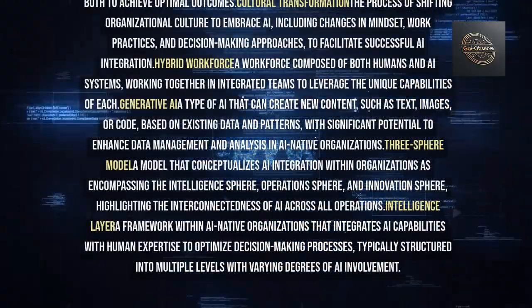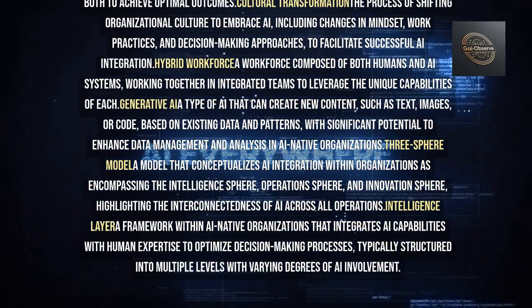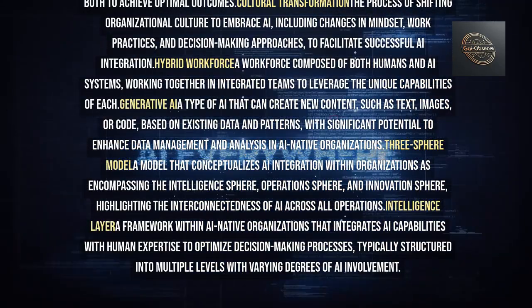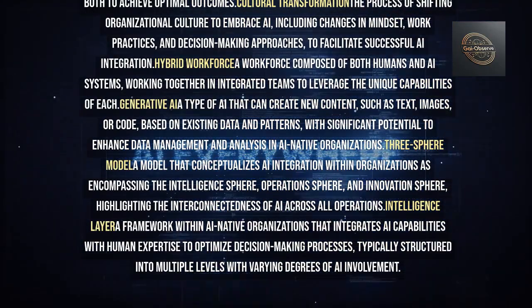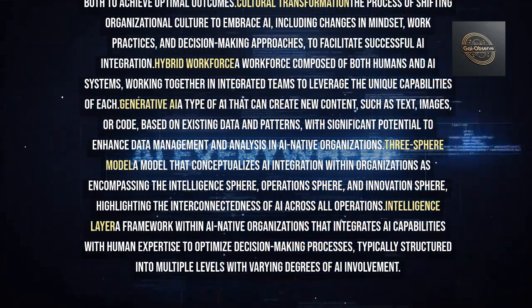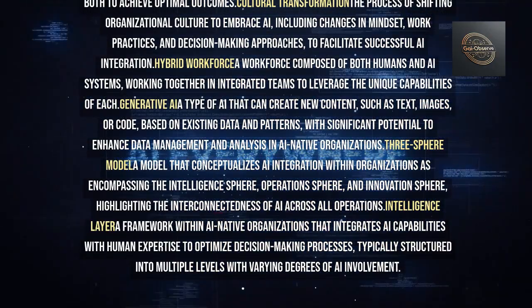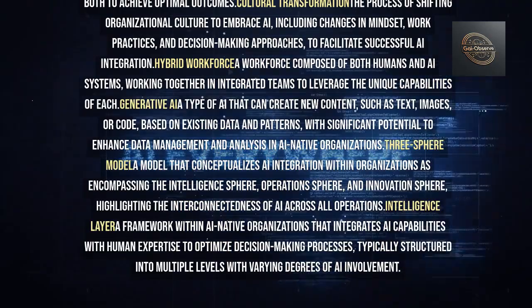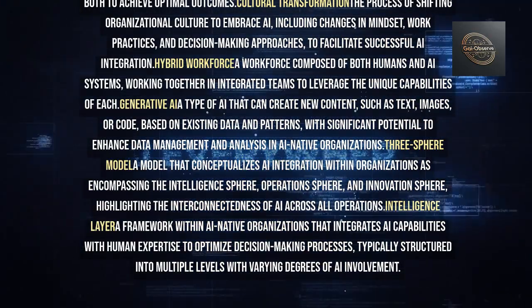Glossary of Key Terms. AI-native organization: An organization designed from the ground up to leverage AI in all aspects of its operations, strategy, and decision-making. Netflix effect: The phenomenon of exponential scaling with intelligence integration, where the effectiveness of AI-native systems grows exponentially as they learn from data. Liquid architecture: A flexible and adaptive technical architecture that can dynamically reshape itself based on real-time demands and changing conditions. Intelligence mesh: A network of interconnected, intelligent nodes that work together to process information and make decisions, enabling distributed intelligence throughout an AI-native system.